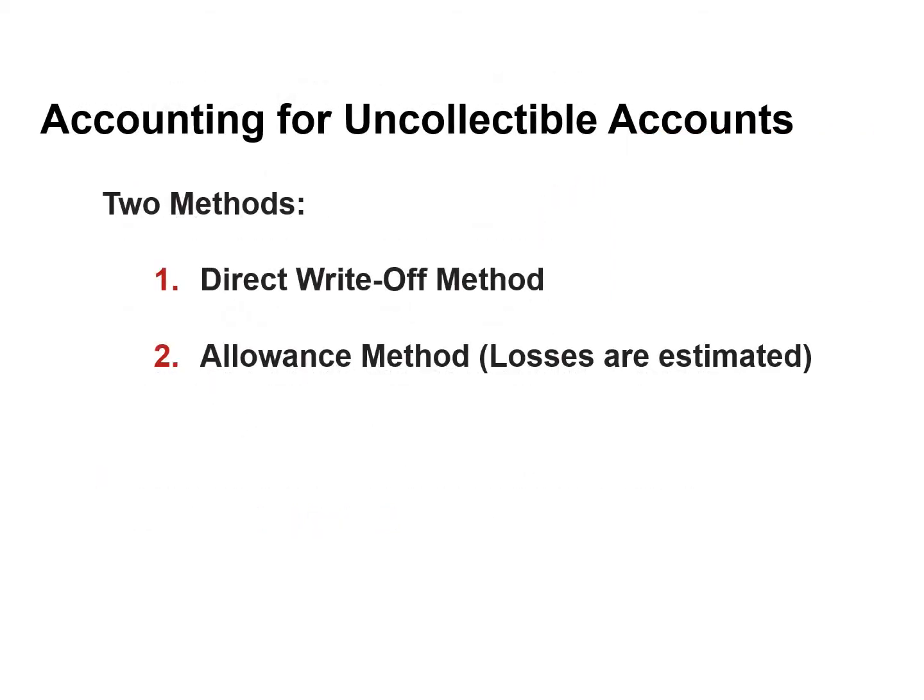Two methods are used in accounting for uncollectible accounts. The first is the direct write-off method, and the second method is the allowance method.